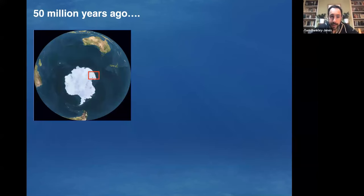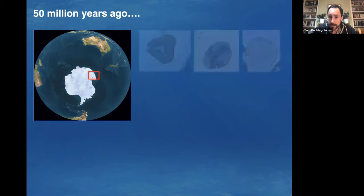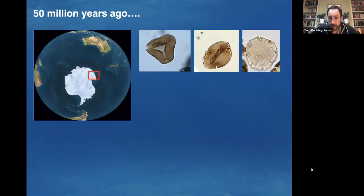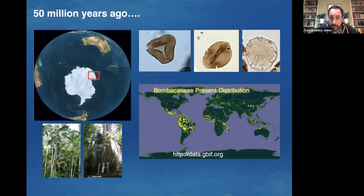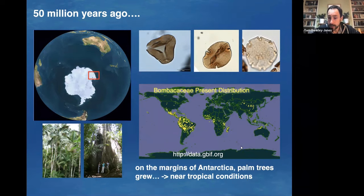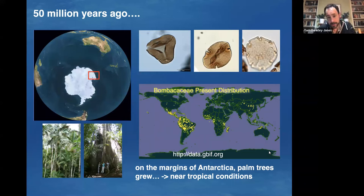Going to the South Pole — drilling off the East Antarctic ice sheet at a place called Wilkes Land also recovered Eocene sediments. In those sediments they found pollen from palm trees. This shows the modern distribution of natural palm trees, and in the Eocene you're seeing them right up to the Antarctic margin — subtropical conditions with mean annual temperatures in the high teens to 20s on the margins of Antarctica, which was pretty much in the same position as today. Really very, very different climates to modern.